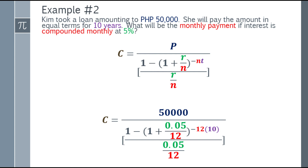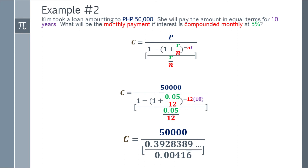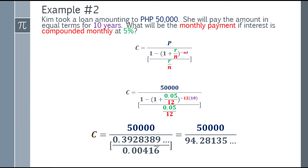Let's simplify further. In the fraction below 50,000: simplify 1 minus (1 plus 0.05 over 12) raised to negative 12 times 10, or negative 120. Then 1 minus that result gives 0.3928389 and so on. For 0.05 over 12, that will be 0.00416 repeating decimal. Simplify further: 0.3928389 divided by 0.00416 repeating gives 94.28135 and so on.